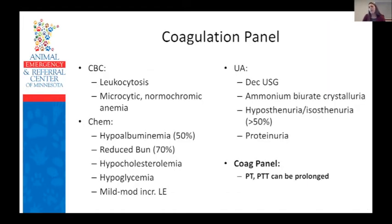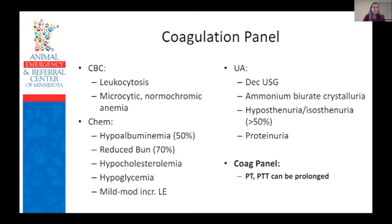Dogs with congenital shunts frequently have coagulation abnormalities; however, spontaneous bleeding is very rare. In one study, they had on average a more prolonged PT, lower platelet count, lower antithrombin activity, lower protein C activity, and increased D-dimer levels compared with the reference population. Evidence of bleeding or thrombosis was not detected in any animals. Anecdotally, some cases do have a prolonged PT and PTT but it has not been clinically significant.